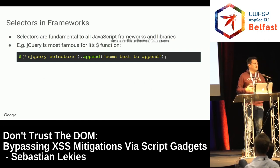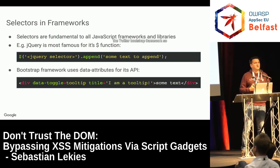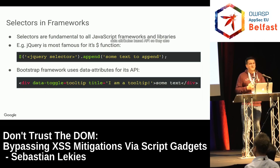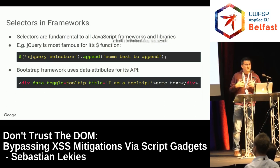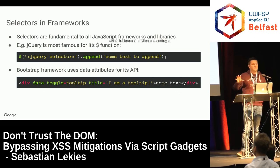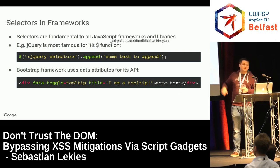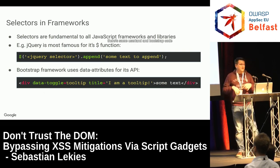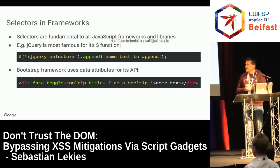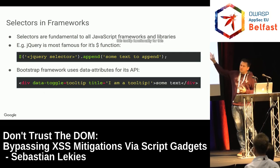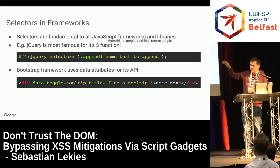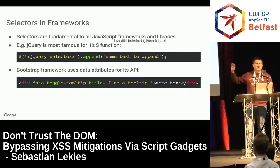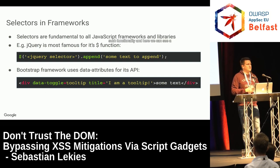Another example is the Twitter Bootstrap framework. Bootstrap uses a data attributes-based API — they use selectors to find all elements in the DOM that have a certain attribute set. For example, a tooltip: you just put some data attributes onto your element, like data-toggle equals tooltip, and some Bootstrap code bootstraps the tooltip functionality and renders the title onto the page. This is also done by selectors. Let's look at how a library would implement such functionality.